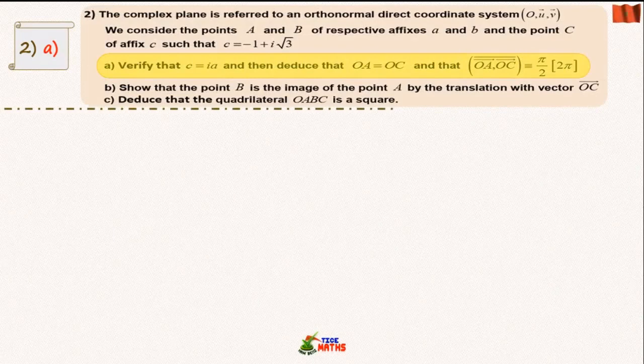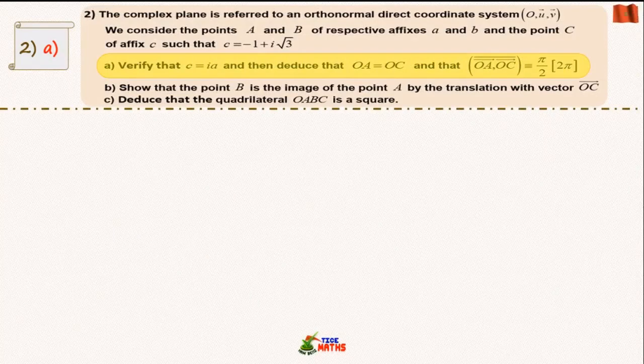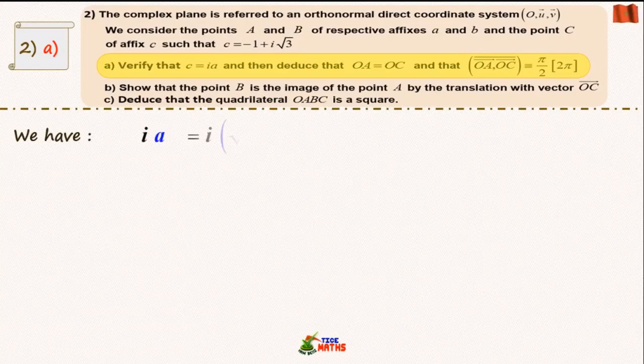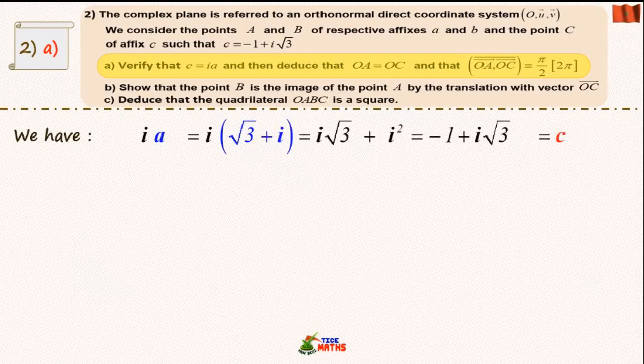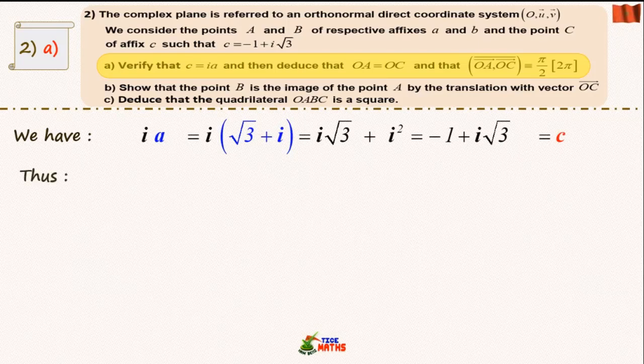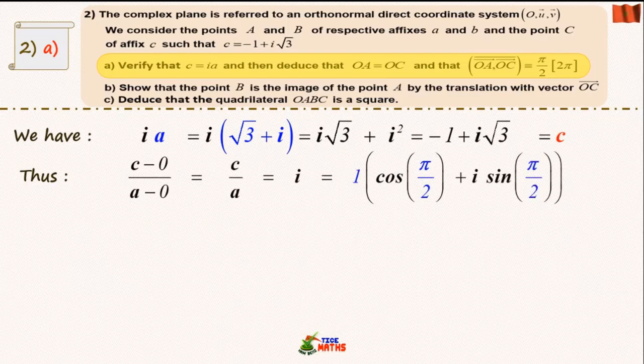Let's move to question 2, sub-question a. If we calculate the product of the two complex numbers i and a, we get easily the given complex number c. Thusly we could obtain the geometric form of (zc - zo) over (za - zo).